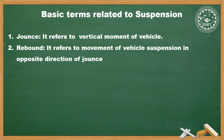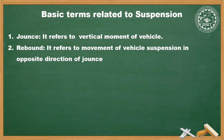Second, rebound. Rebound refers to the movement of vehicle suspension in the opposite direction of jounce. The downward travel of the tire and wheel that extends the spring and shock absorber is called rebound. That is, when the vehicle undergoes jounce movement, the return or opposite movement of the suspension is called rebound. When the spring is deflected, it stores energy, and this downward travel of tire and wheel extending the spring and shock absorber is the rebound motion.